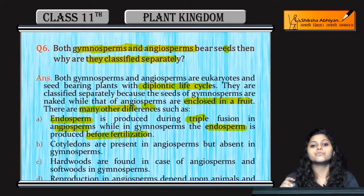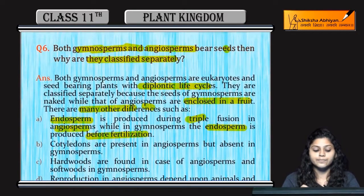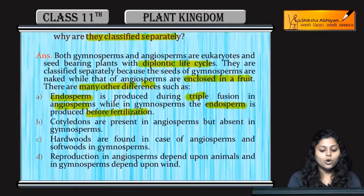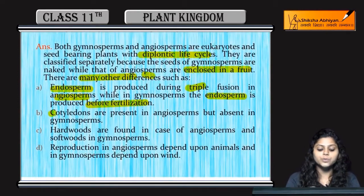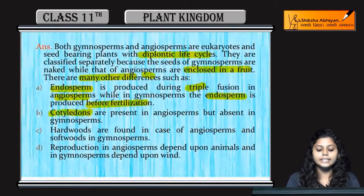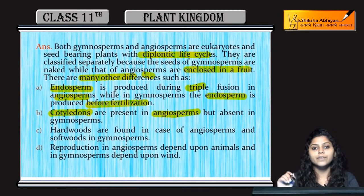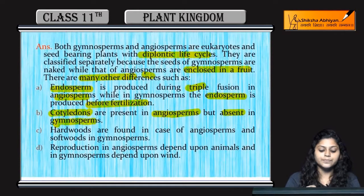Next difference is the presence of cotyledons. Angiosperms में cotyledons present होते हैं, whereas in gymnosperms they are absent.